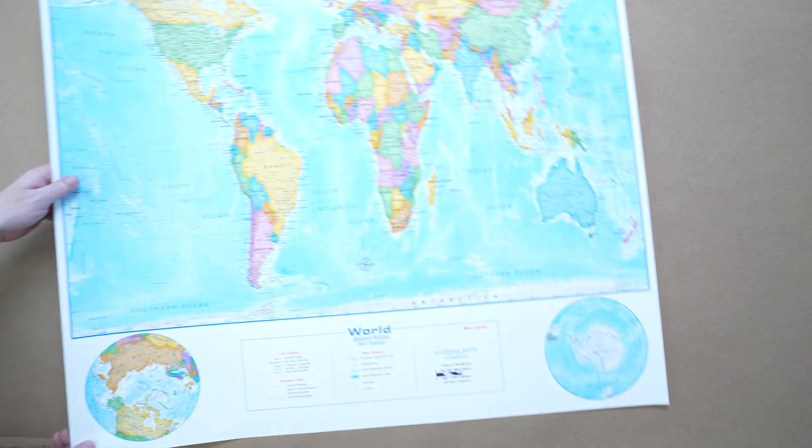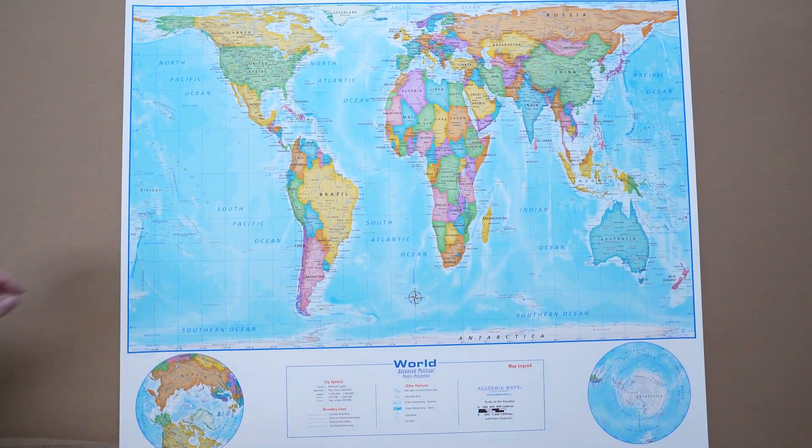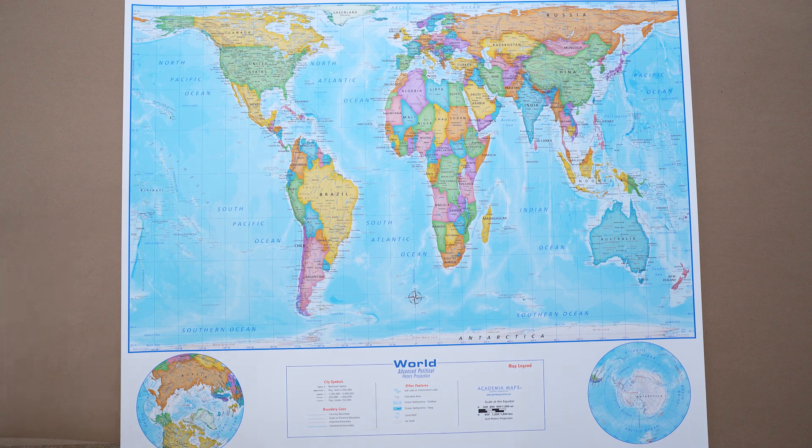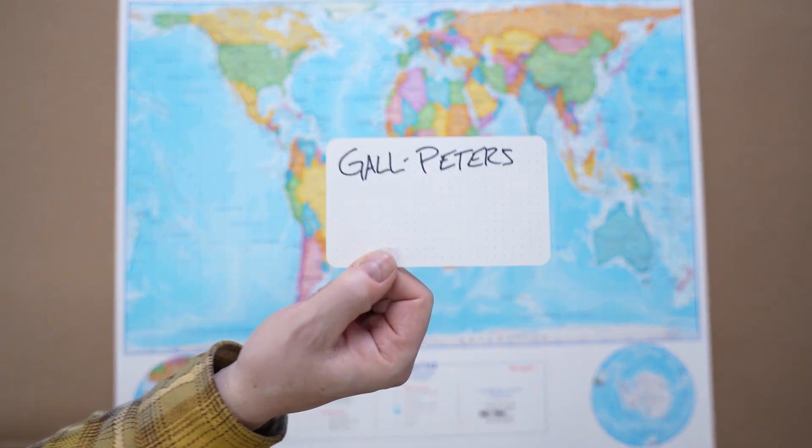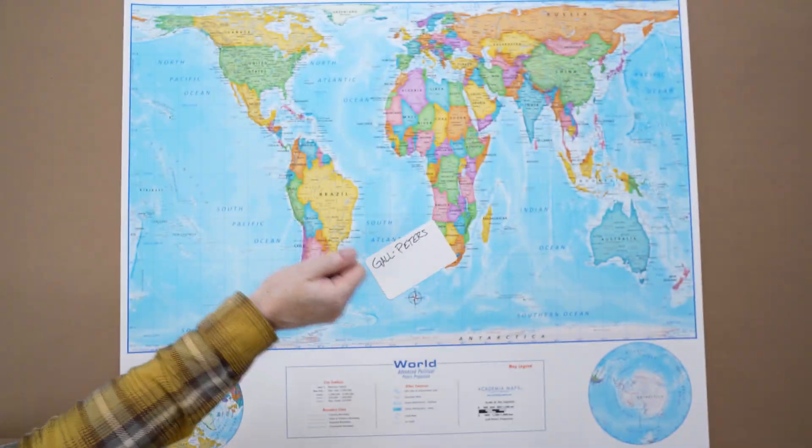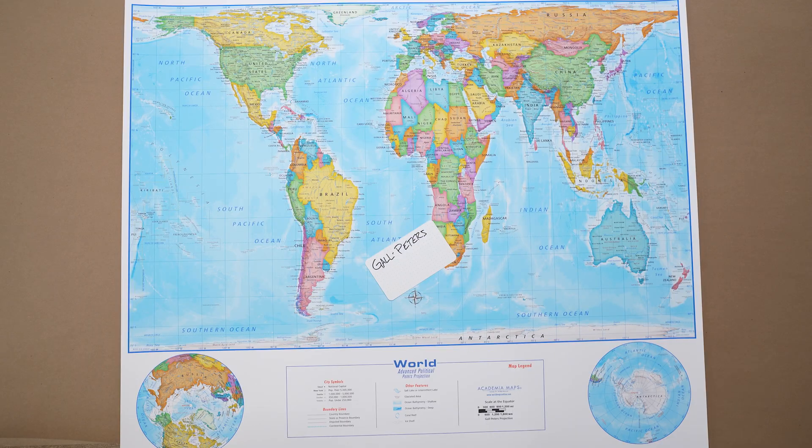This is the Gall-Peters projection, also called an equal area projection. This one prioritizes accurate size. Every country is shown at its true relative area. Africa looks huge on this map because it is. Greenland looks small because it is. The trade-off? Shapes get distorted, especially near the equator. Countries look stretched vertically. It's a little weird to look at if you're used to Mercator.